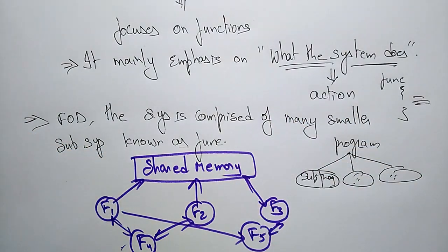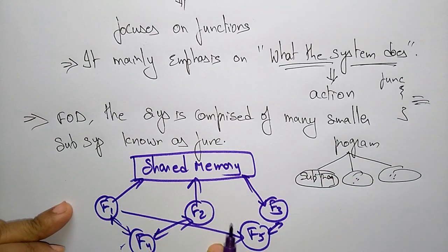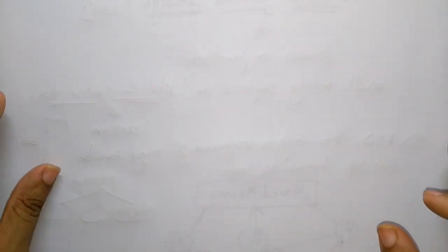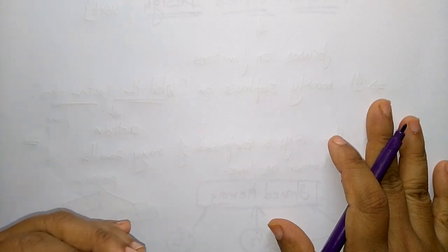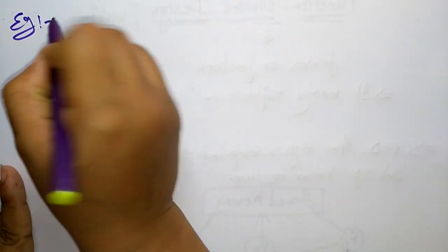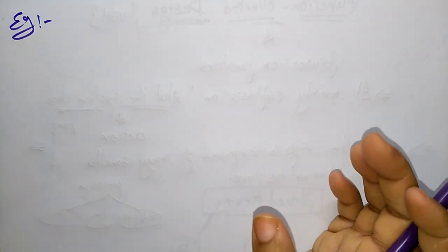Function oriented design works well where the system state does not matter and the programmer's functions work on input rather than state. We are giving some input to the function, then the function module is going to perform some action. Let me take one example for function oriented design — how the functions are implemented if you take any software program.